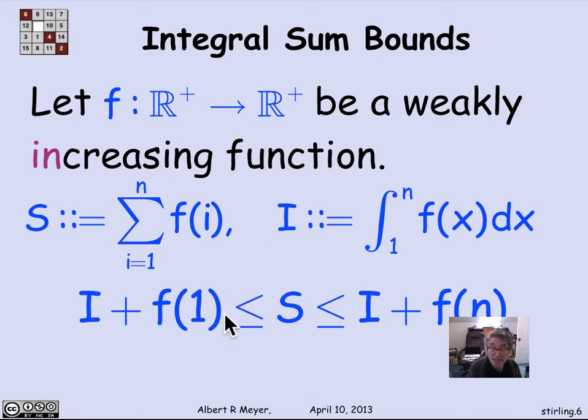And the theorem says that with increasing functions, s is bracketed between the integral plus the last term in the sum and the integral plus the first term in the sum. Remember, since the function's weakly increasing, f of 1 is smaller than f of n. So that's the way you remember which way the bounds go. So s is between I plus f of 1 and I plus f of n by our general formula for applying integral bounds to sums.